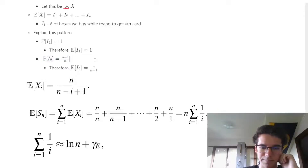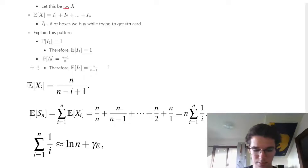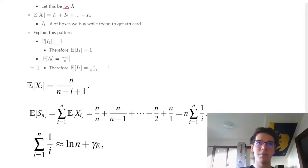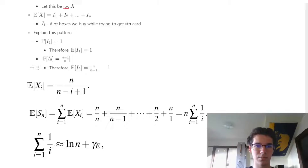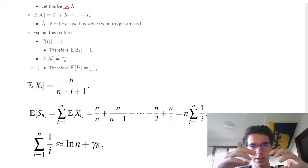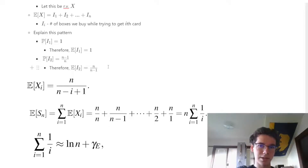The second time, the probability of getting a new card is (n-1)/n. We had n total cards to choose from and already picked one, so now we only need n-1 of the n possible cards. Since all n cards each have 1/n chance of being in a box, and we need any of the n-1 remaining cards, the probability is (n-1)/n.